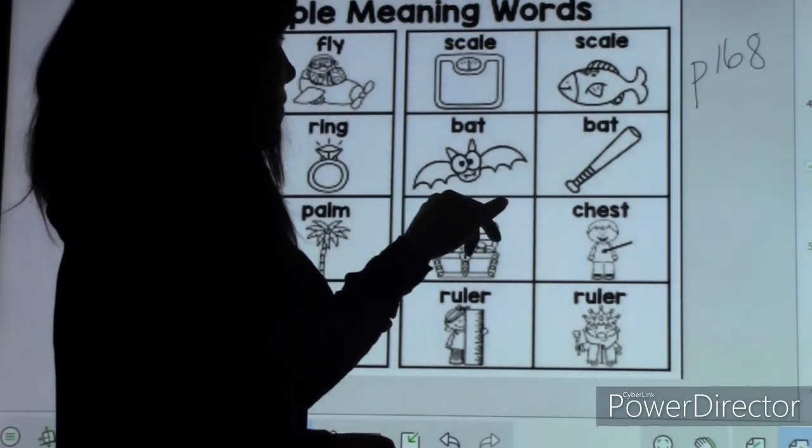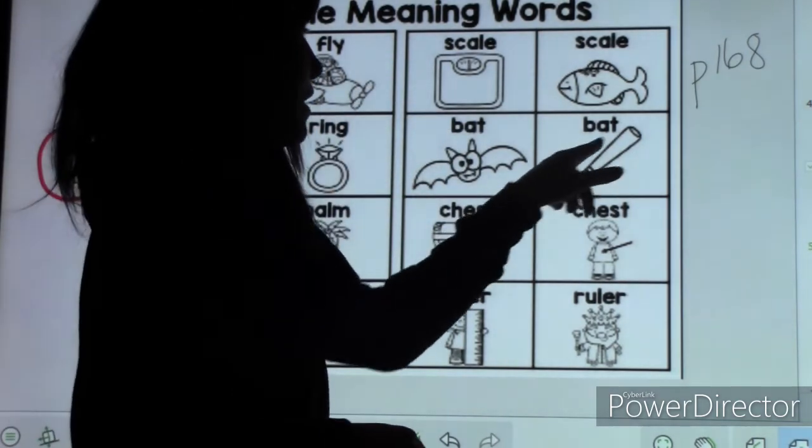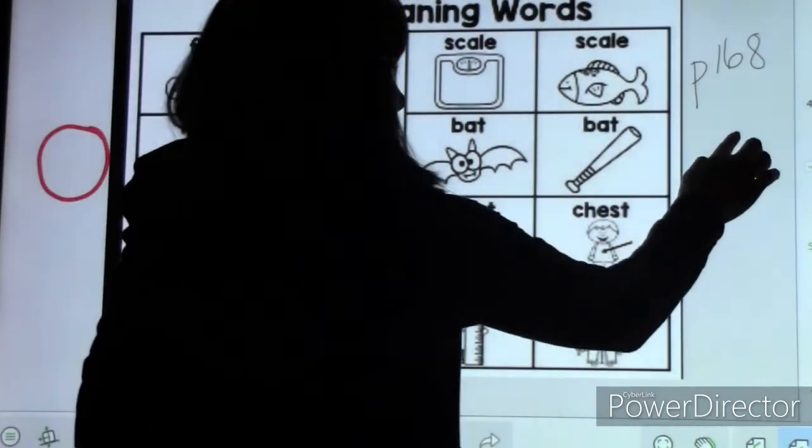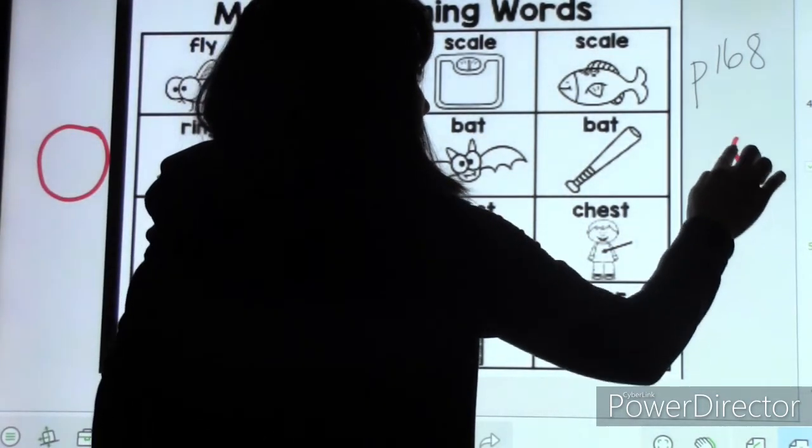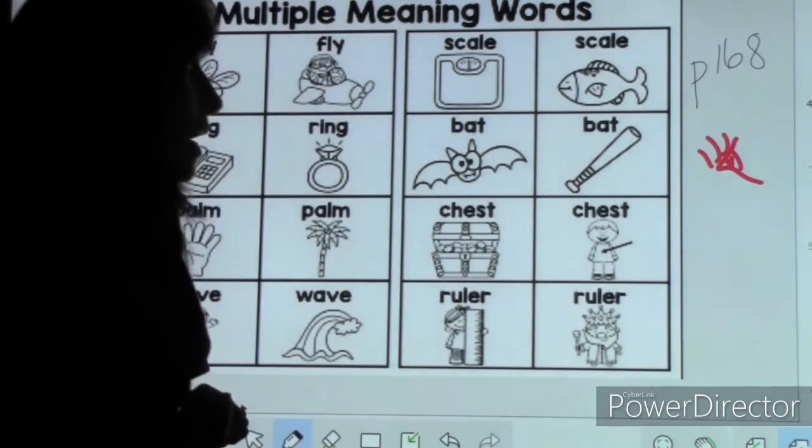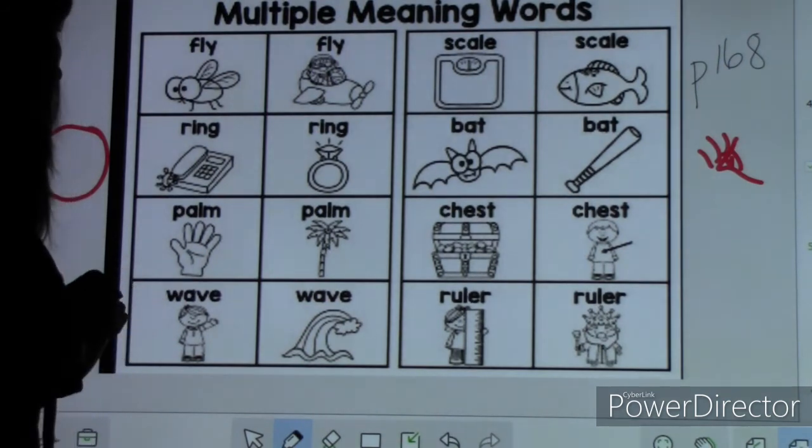We have bat, like the flying bat, and a bat, like a baseball bat. There's also a verb bat. Like when you open and close your eyes very quickly, you can say, she bats her eyelashes. That's the movement that you make when you open and close your eyes very quickly.